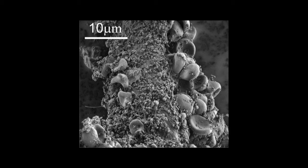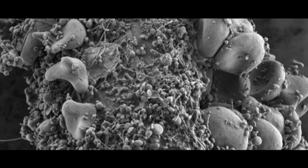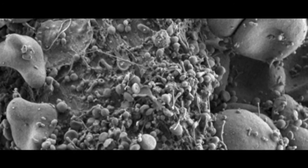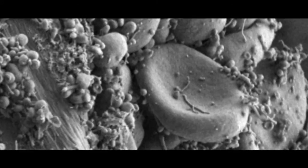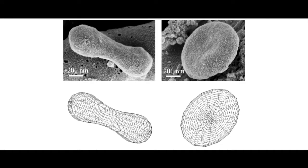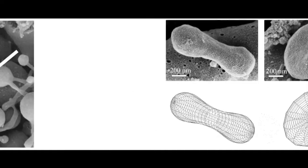Here we see an isolate from the blood of a healthy human donor exhibiting a mass of nanoparticles and many residual erythrocytes. Comparison with theoretical shapes shows that these particles are membrane-enclosed vesicles without internal structure.